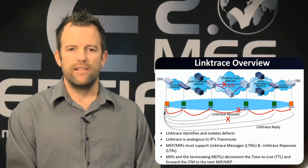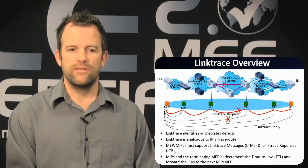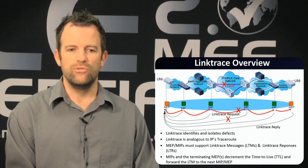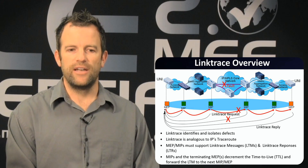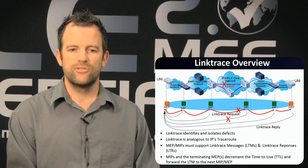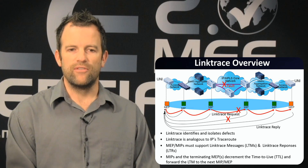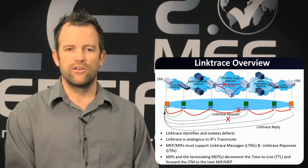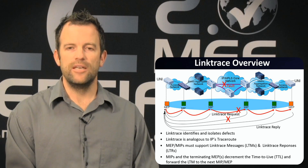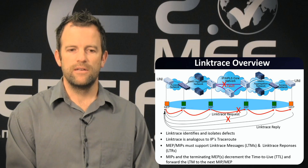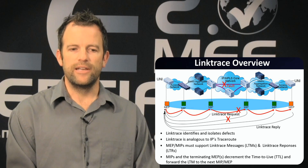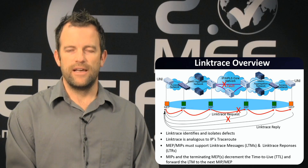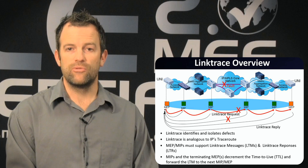Finally, the link trace function is used to identify and isolate faults in the network. I'm showing a fault condition occurring at the IP MPLS core network. The link trace is analogous to the IP trace route.